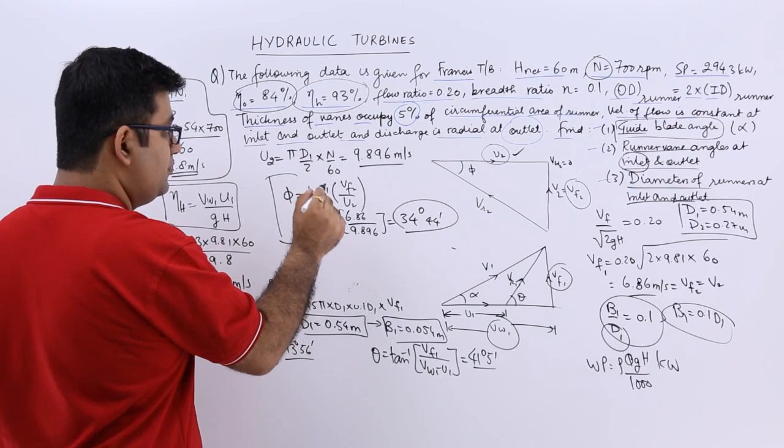This is a very calculation-intensive question. Make sure you understand the inlet velocity triangle (IBT) and outlet velocity triangle (OVT) in detail. Now let's move on to one more question on Francis turbine.